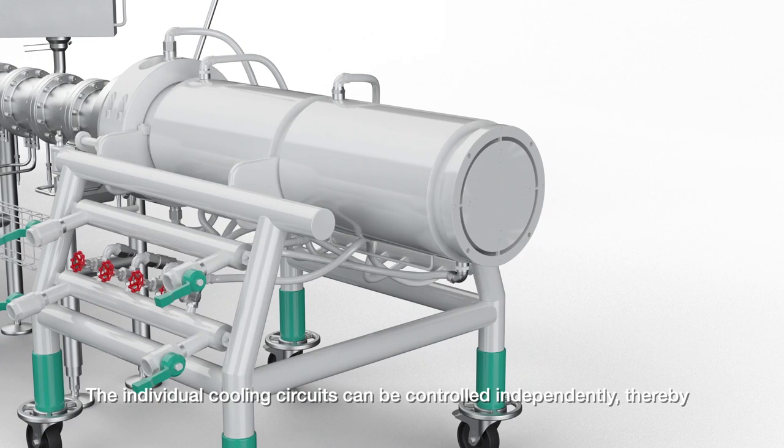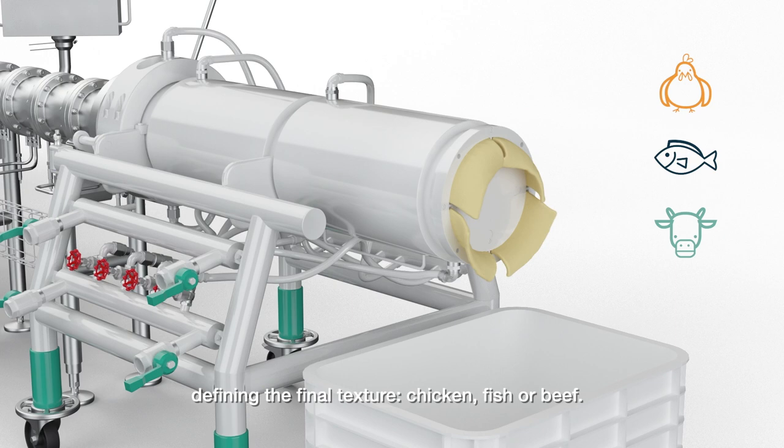The individual cooling circuits can be controlled independently, thereby defining the final texture: chicken, fish, or beef.